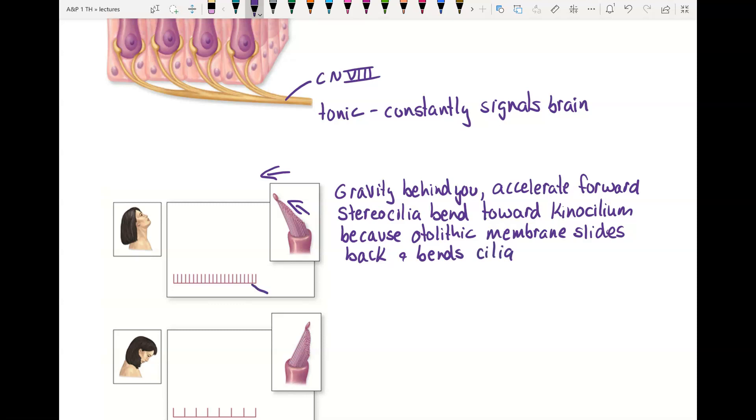The reason they bend this way is because of that otolithic membrane. The otolithic membrane responds to the gravity. It has those otoliths that make it heavy and it slides back. When gravity is behind you or you're accelerating, when the cilia bend toward the kinocillium you get faster signals to the brain.